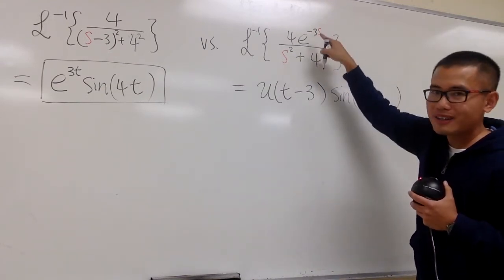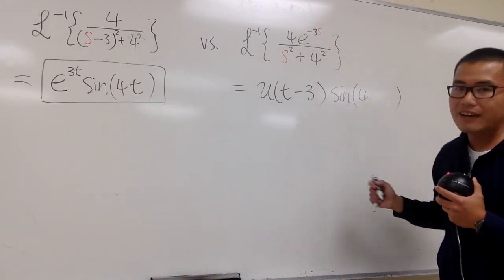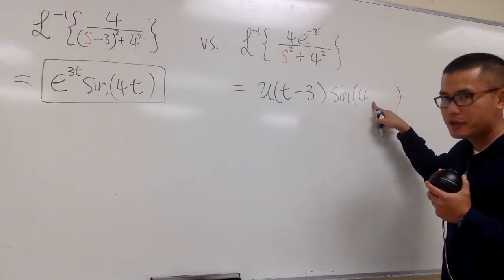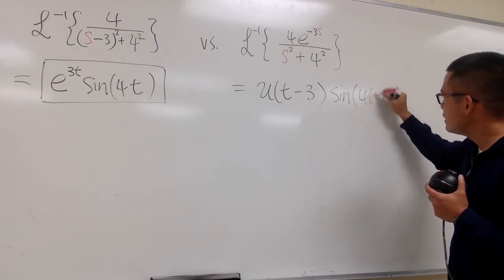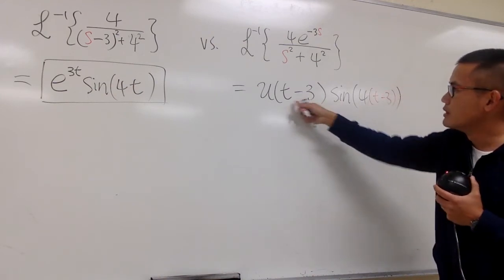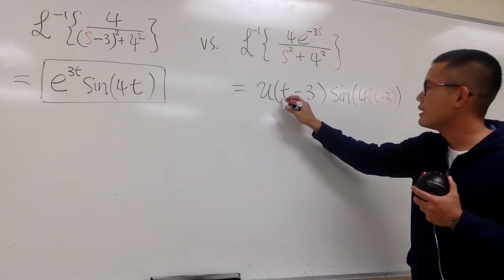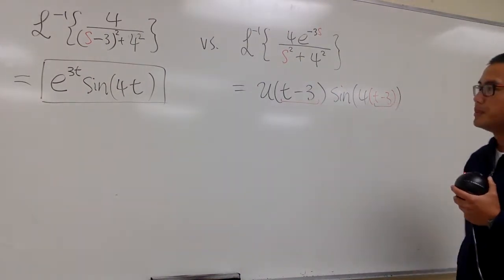whenever you have this part, the input have to be the same. So it's not just a t right here. It has to be t minus 3, with the parentheses as well, right? The input, they have to be the same.